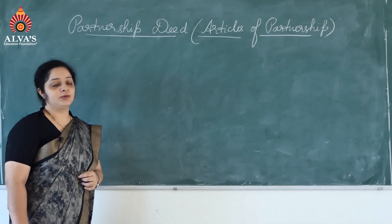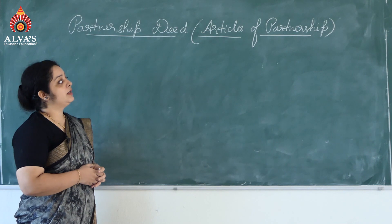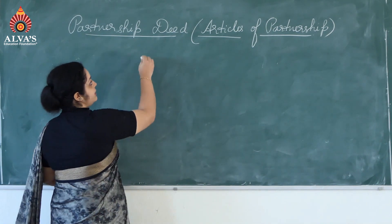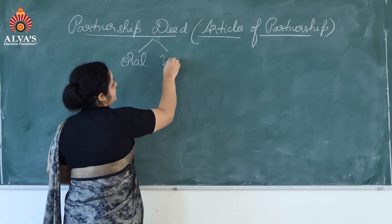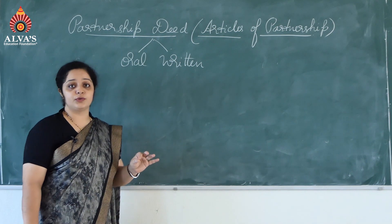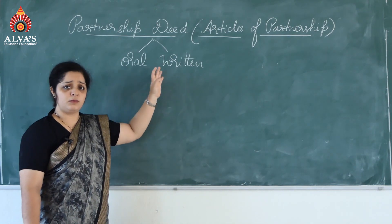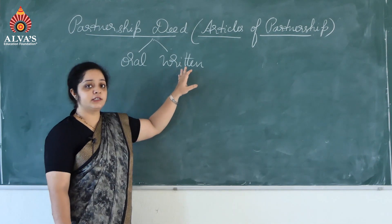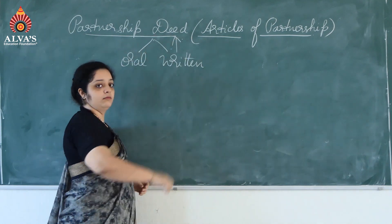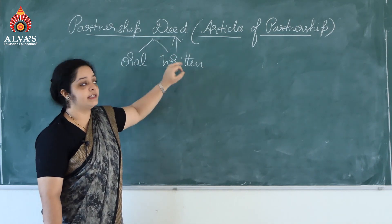Now going to the next topic: partnership deed. This topic you have also studied briefly in your first year business studies. While explaining the definition, I told you there should be some kind of agreement involved, and there are mainly two types: oral agreement and written agreement. The Indian Partnership Act does not make any compulsion — it is left to the partners whether they want oral or written agreement. If the partnership firm decides to go with the written agreement, then that written agreement is called as partnership deed. In simple words, the written agreement of partnership is called as partnership deed.